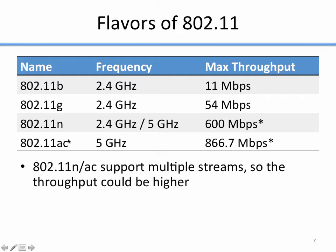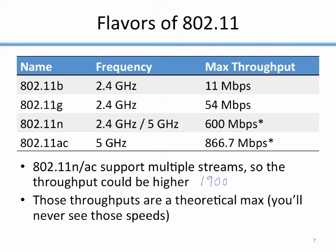N and AC both support multiple streams, meaning you can get 600 Mbps on N from one stream and run two streams simultaneously if your devices have multiple antennas. On AC, I've seen routers advertise up to 1900 megabits per second with the right number of antennas. However, all these throughputs are theoretical maximums. In practice, because it's wireless, you'll have interference and lost packets, so your actual throughput will be lower.